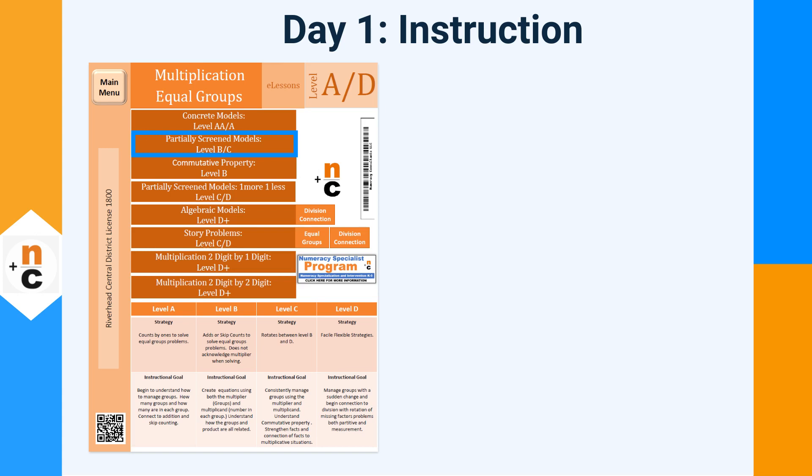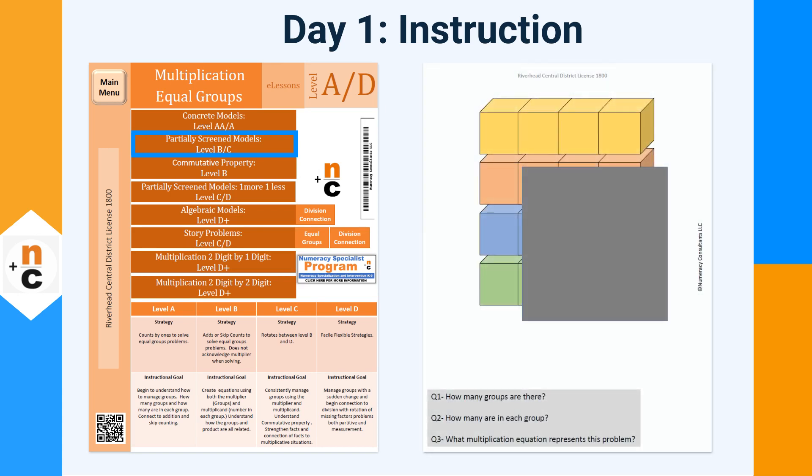Remember, level B students are either using repeated addition or skip counting to find the total. Our goal is for them to start acknowledging and using the multiplicand and multiplier to write an equation. Once you select the level at which you are working, just read the prompts and go through the slides.